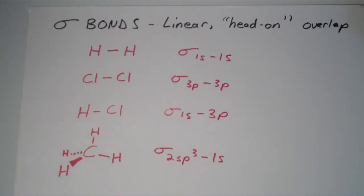So s orbitals, p orbitals, hybrid orbitals, pretty much every kind of orbital is capable of this direct head-on linear overlap that we call a sigma bond.